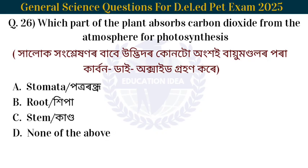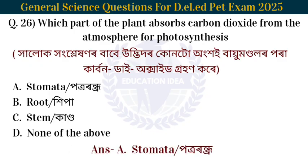Next question: Which part of the plant absorbs carbon dioxide from the atmosphere for photosynthesis? The plant absorbs carbon dioxide from the atmosphere through its leaves for photosynthesis.